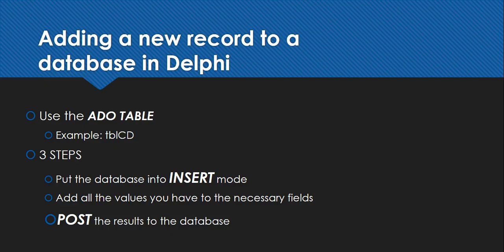What happens with the post step is: if something goes wrong between the insert step and the post step, the record won't be inserted because the post didn't happen. It's a way to make sure that a record won't be inserted unless everything is done properly — a fail-safe that databases have to make sure the data goes in correctly. So those are the three steps: insert mode, assign field values, post.